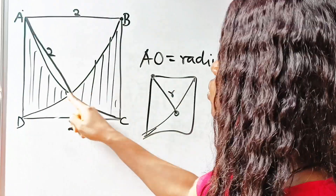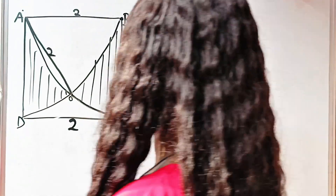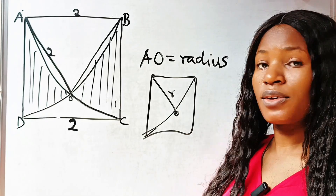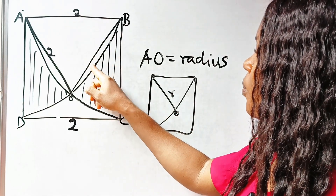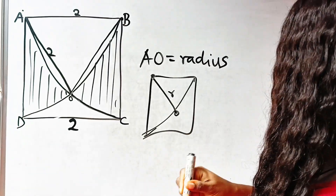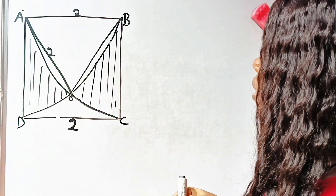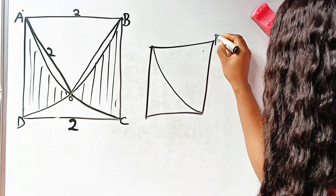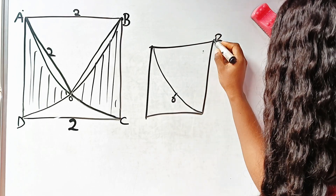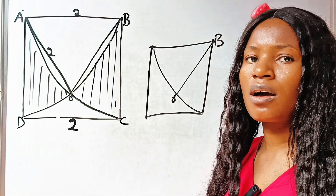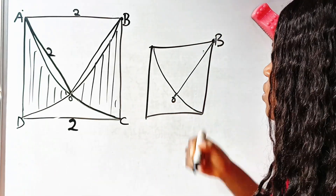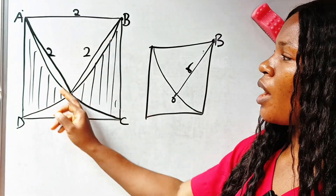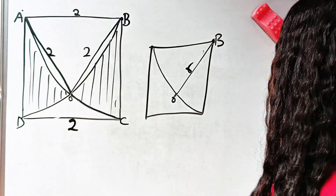Similarly, let's join from B to center O. You will also notice that OB is also the radius. Remember, if you join from the center of this particular quadrant to the circumference, it's also a radius, and that radius is two. So now we have an equilateral triangle of sides two, two, two.